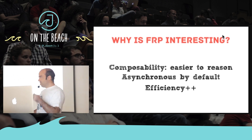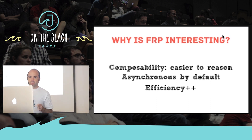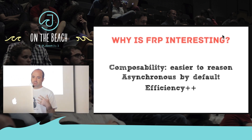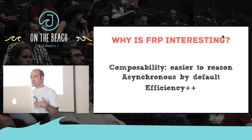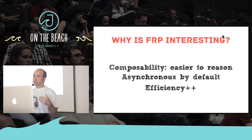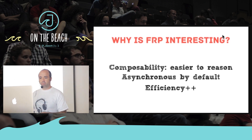Why is FRP interesting? On one side, writing code in a functional, composable way makes it easier to reason about the complex interactions of our code. The other interesting thing is that FRP is designed to be asynchronous by default. At no point are you actually waiting for things to happen — you take your input, you transform it, you produce an output. You're always asynchronous by default, which means you make better use of your resources. There are no threads or locks waiting to happen.